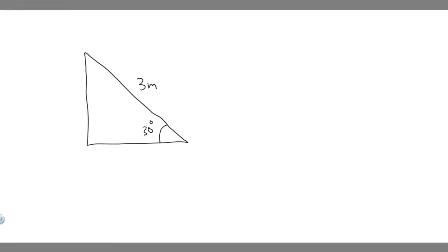In this problem, we're told the right triangle has a hypotenuse length of 3 meters, and one of its angles is 30 degrees. What are the lengths of A, the side opposite the 30 degree angle, and B, the side adjacent to the 30 degree angle?